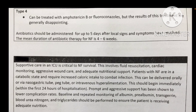Nutritional support should begin within the first 24 hours of hospitalization, and prompt aggressive support has been shown to lower complication rates. Baseline and repeated monitoring of albumin, pre-albumin, transferrin, blood urea nitrogen, and triglycerides should be performed to ensure adequate nutrition. Advanced wound dressings have replaced wet-to-dry dressings, as they promote granulation tissue formation — the growth of new blood vessels, connective tissue, and fibroblasts at the healing site.